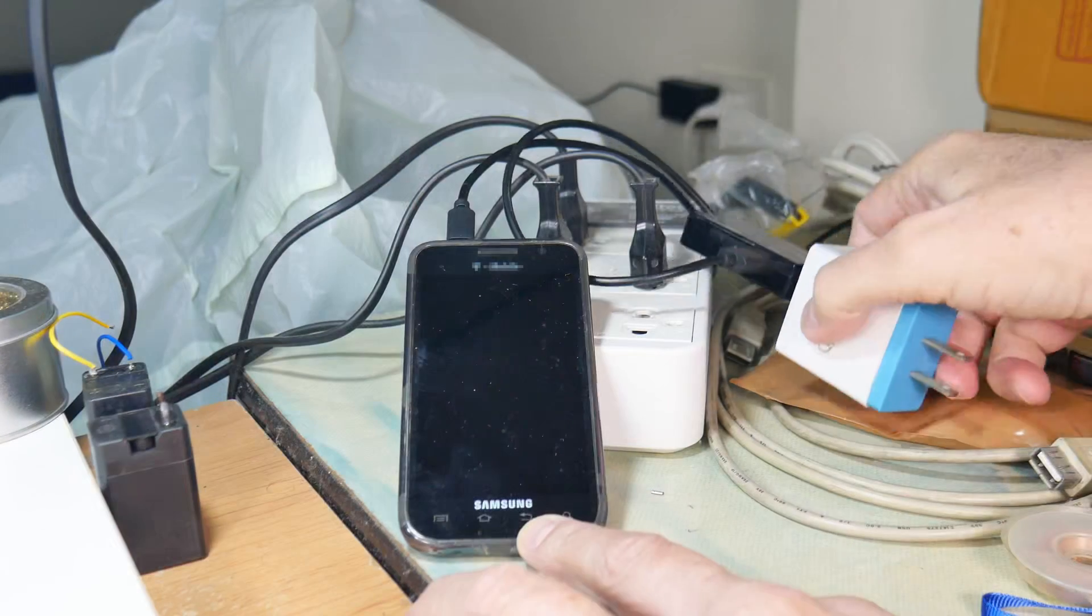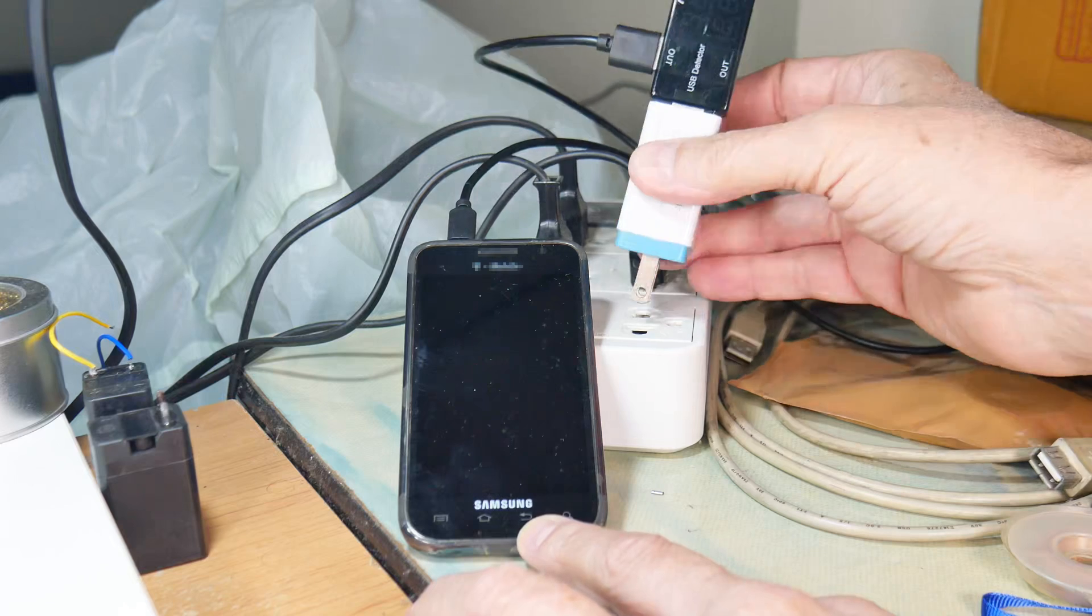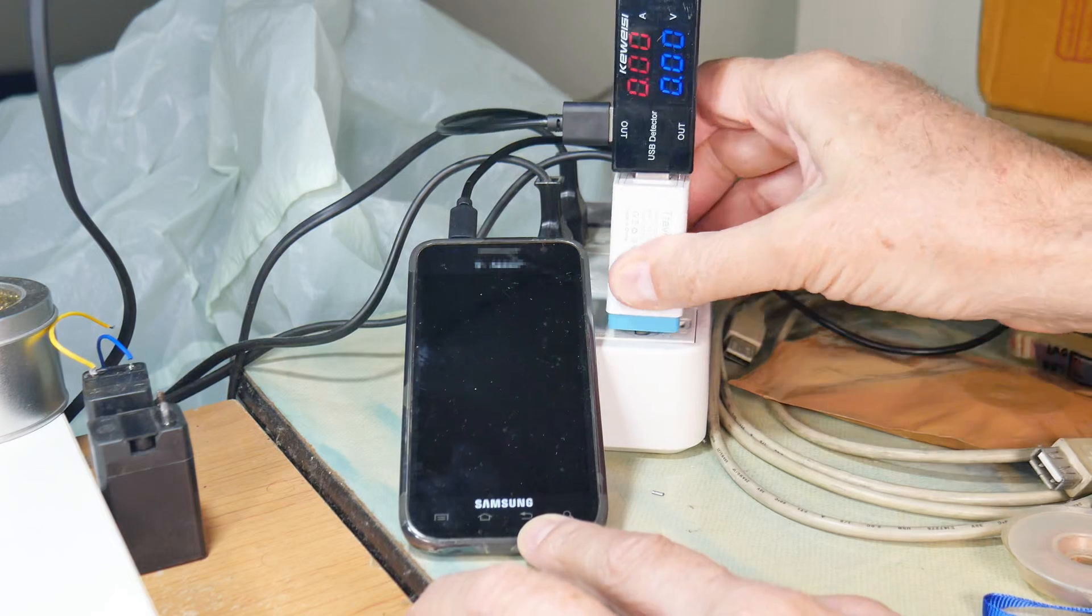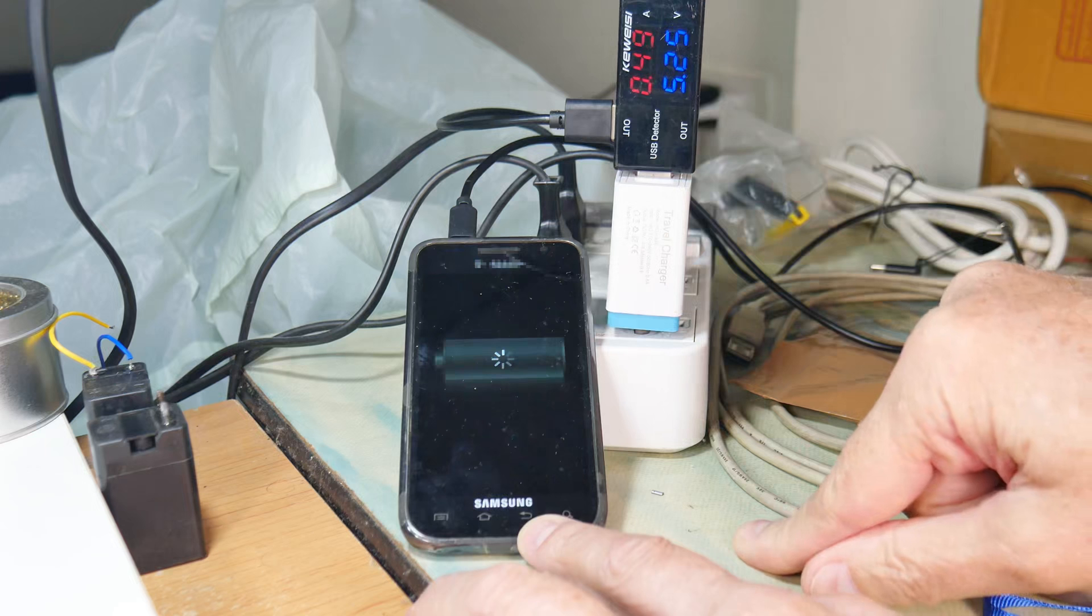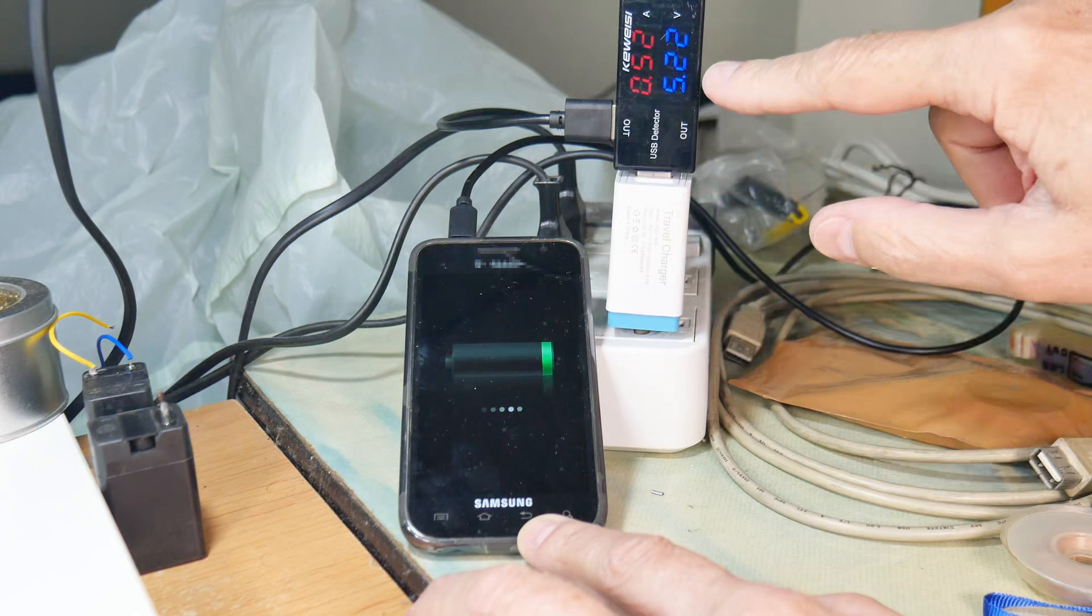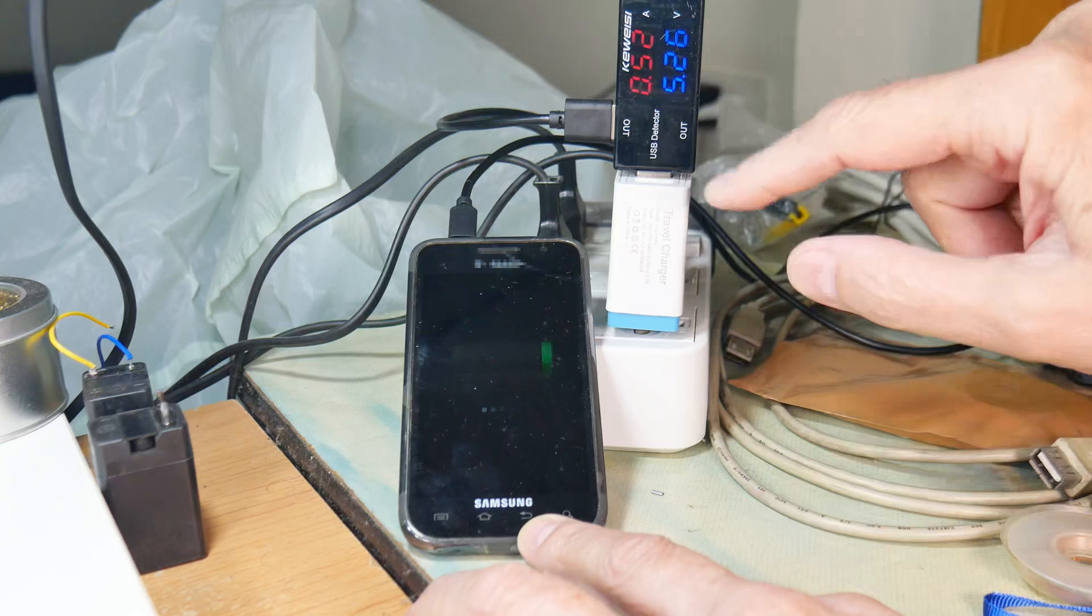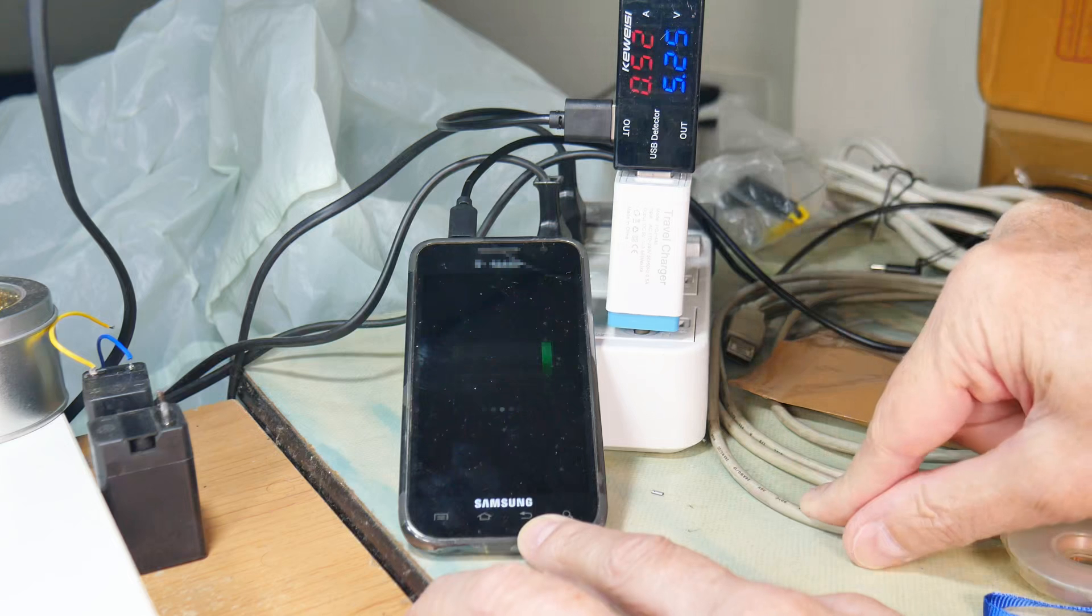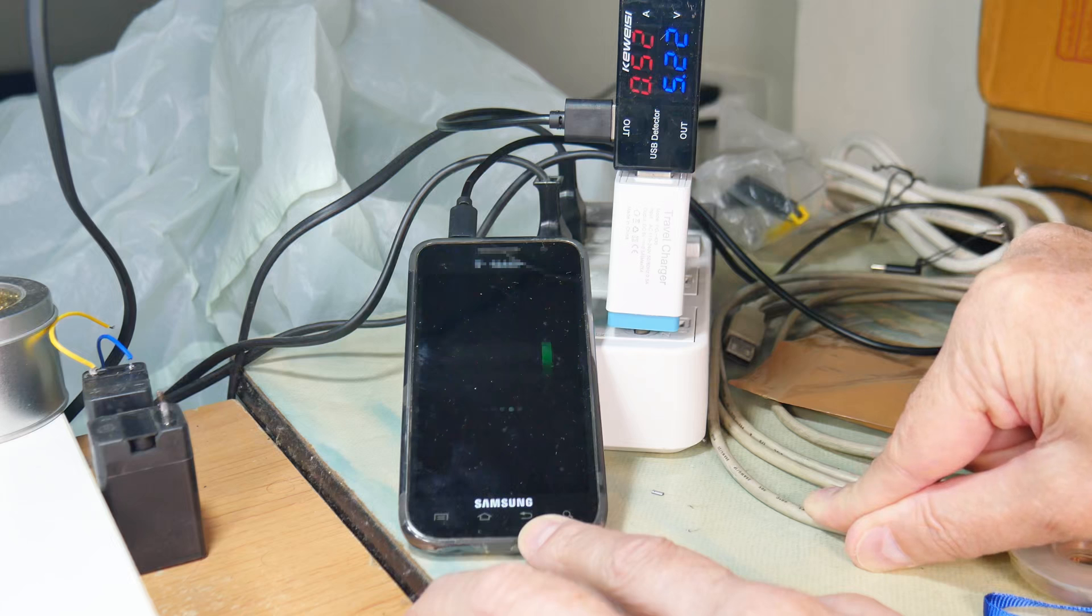First let's get a baseline of what it takes to charge this phone and we'll use the AC outlet and this little device right here. And it looks like about half an amp and about five point two, five point two three volts. Okay so that's what we would have to get from our generator in order to start charging this phone. So let's hook up the generator and see what happens.